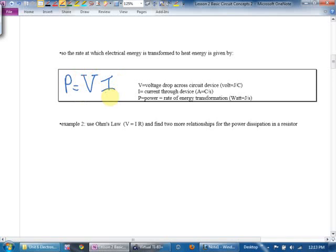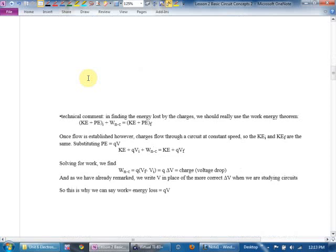So the rate at which electrical energy is transformed to heat energy is given by power equals VI. But please remember, oh, I forgot that I had this as an example. It says use Ohm's law, V equals I times R, to find two more relations for the power dissipation in a resistor. So we said one was I squared R. That's if you plug in the IR right there. And the other one was V squared over R. I rarely use this one. I usually use this one. I sometimes use this one.